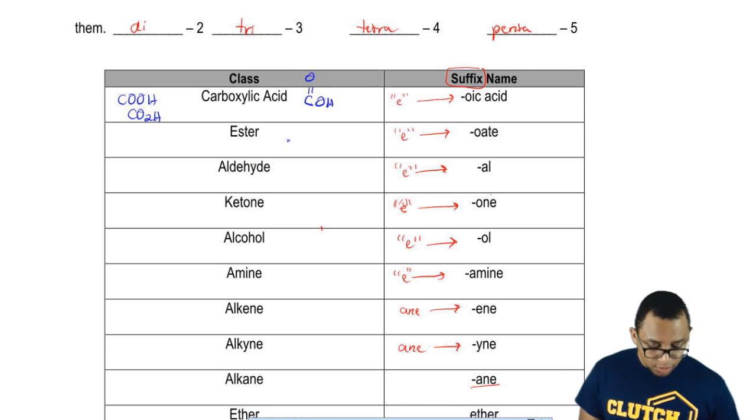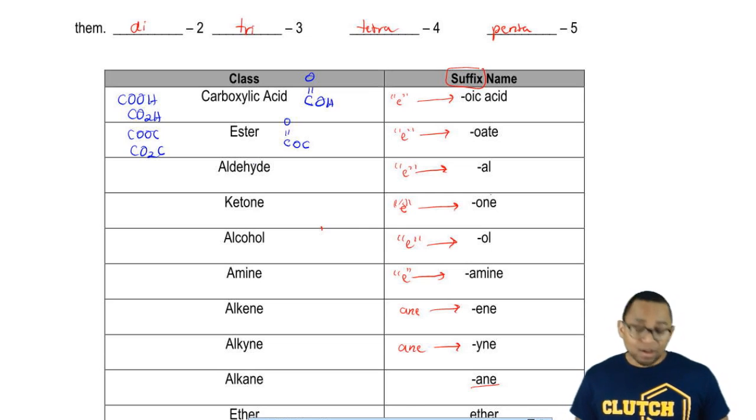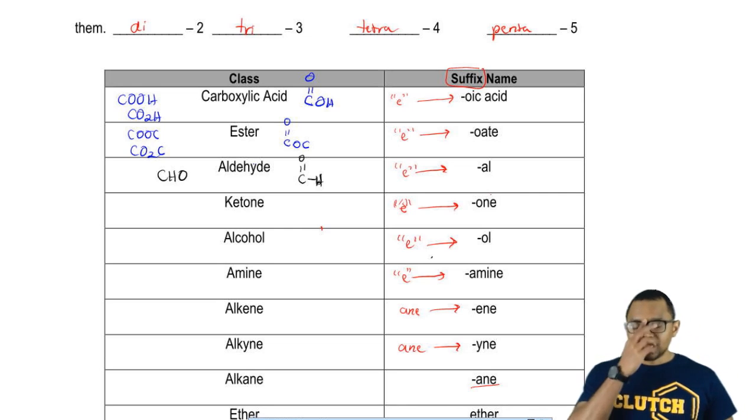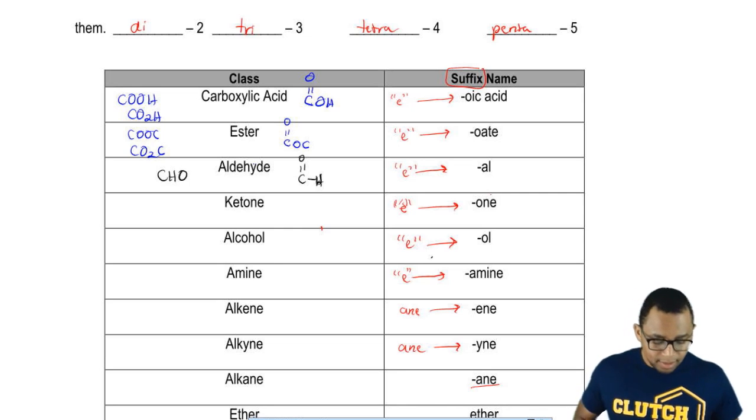An ester is a C double bond O connected to an O connected to a C. You could have it written as COOC or CO2C. An aldehyde is a C double bond O connected to an H. It can also be written as CHO. That's the shorthand way of writing an aldehyde. A ketone is C double bond O connected to a C on both sides.